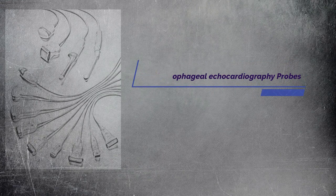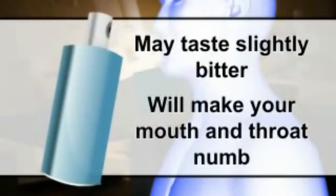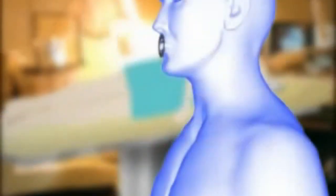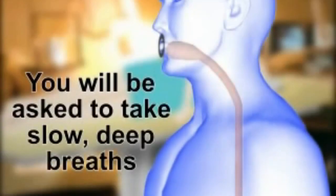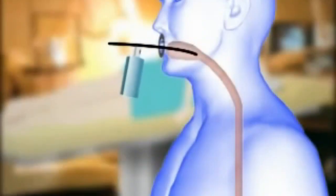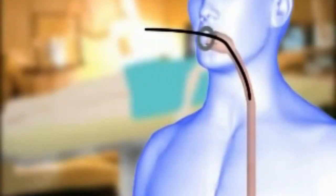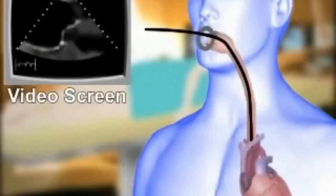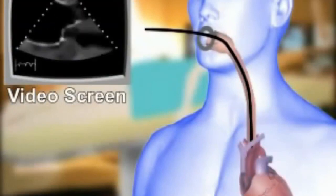Let's know about transesophageal echocardiography probes. Transesophageal echocardiography, TEE, is a test that produces pictures of your heart. TEE uses high-frequency sound waves, ultrasound, to make detailed pictures of your heart and the arteries that lead to and from it. Unlike a standard echocardiogram, the echo transducer that produces the sound waves for TEE is attached to a thin tube that passes through your mouth, down your throat and into your esophagus. Because the esophagus is so close to the upper chambers of the heart, very clear images of those heart structures and valves can be obtained.